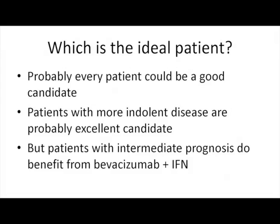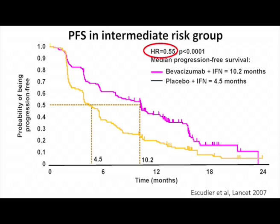Which is the ideal patient to receive bevacizumab plus interferon? I think almost every patient could be a good candidate. Certainly patients with more indolent disease are excellent candidates, and for every patient where you think interferon could be appropriate, adding bevacizumab will add efficacy. But intermediate-risk group patients also benefit significantly — in the AVOREN trial, the hazard ratio is very favorable: 10.2 months versus 4.5 months just in the intermediate-risk group. This regimen is active not only in good-risk but also in intermediate-risk patients.